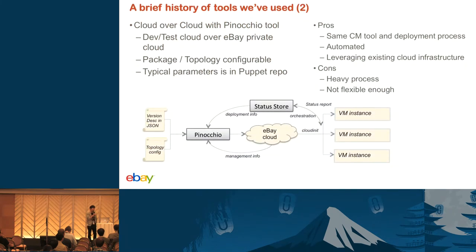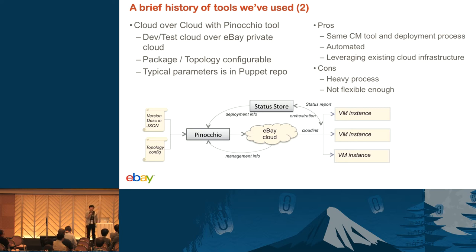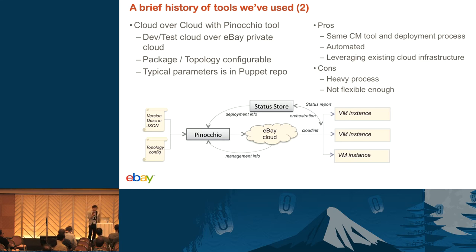So we have another solution, called Pinocchio, which is based on the cloud — cloud over cloud. We already have a cloud running, so we can ask the cloud for some compute and network resources and set up another cloud on top of it in our dev VPC, the dev private cloud. The Pinocchio tool — the orchestration engine in this diagram — takes input from JSON. The JSON specifies which version you want: the Nova version, Neutron version, monitoring service version, and the topology — for example, do you want Neutron and Nova on the same node? Do you want to use Nova cells? How many Nova compute nodes do you want?